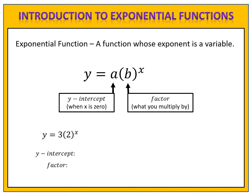Let's see how you did. Here we have 3 for the a value — that's the y-intercept. The y-intercept of this function, the value when x is zero, is 3. The b value represents the factor; here the factor is 2. Now let's look at the table of inputs and outputs. We know the y-intercept is 3, so when x is zero, y is 3. The factor is 2, so we're multiplying by 2 to generate the next outputs. Here's the input and output table for inputs 0, 1, 2, 3, and 4 for the function y equals 3 times 2 to the x.